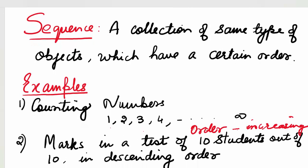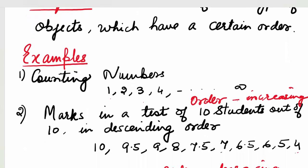A sequence is nothing but a collection of same type of objects which have a certain order. In other words, when related events, people, things, numbers, etc., they follow each other in a particular order, we say they form a sequence. As they are a collection of objects, the elements of the sequence when written are separated by commas. Let's look at some examples.